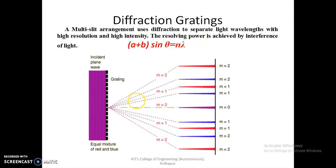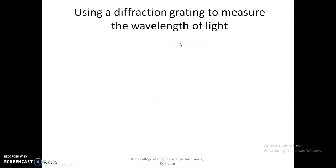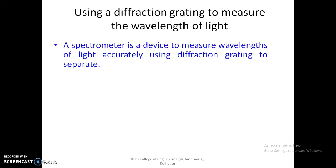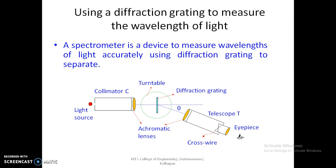We can find out the wavelength by using diffraction grating. If we know the grating element (a + b), and we measure θ using a spectrometer, we can find out the wavelength. The spectrometer is the device used to measure wavelength accurately by using diffraction grating.